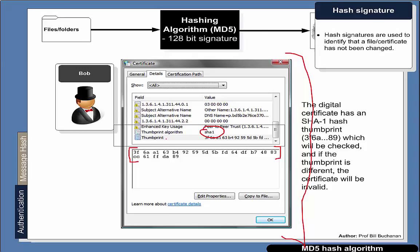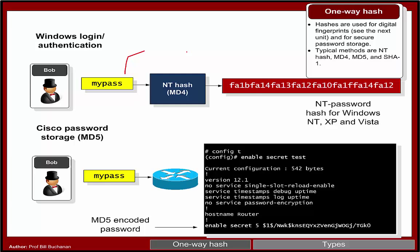We also see hashing used in terms of storing passwords. In Windows we have an NT-Hash password which is hashed into the registry. We also see it in things like Cisco routers, where the password is hashed into the configuration.